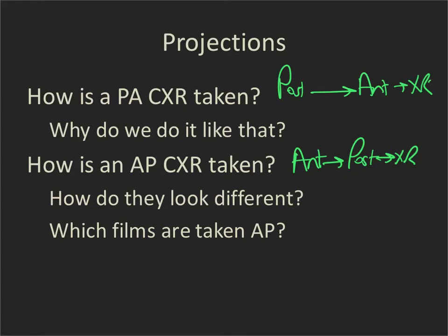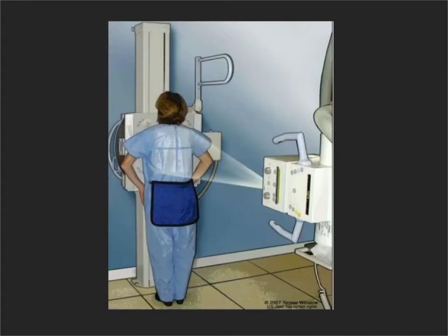Which films are taken AP? Basically anything where the patient is not able to come to the x-ray department and is not usually able to stand up. We can do PAs occasionally with them sitting on a stool or chair, but they have to be at least reasonably mobile. So this is a patient having a PA chest x-ray. The x-ray beam is going from their posterior surface through their front and into the image receptor plate. Notice how her arms are brought out to her side — this is to rotate the scapulae out of the field of view.